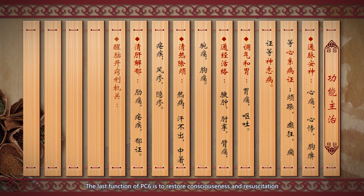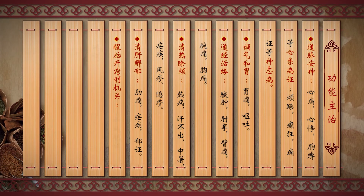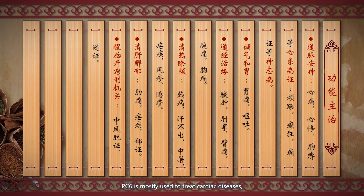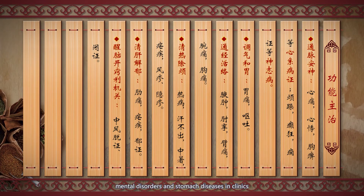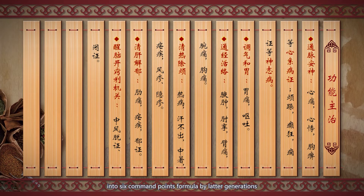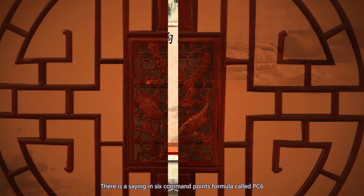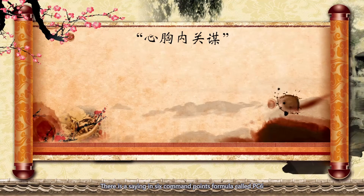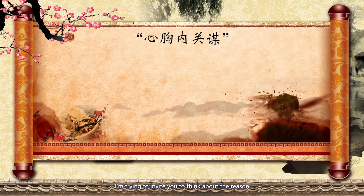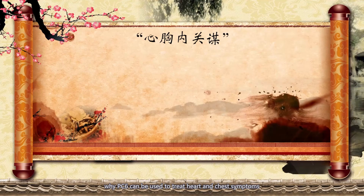The last function of PC6 is to restore consciousness and resuscitation, treating wind stroke prostration and wind stroke block. PC6 is mostly used to treat cardiac disease, mental disorders, and stomach disease in clinics. The four-command points formula has been expanded into a six-command points formula, which includes the saying that PC6 can be used to treat disease of the heart and chest. Let's consider why PC6 can treat heart and chest symptoms.